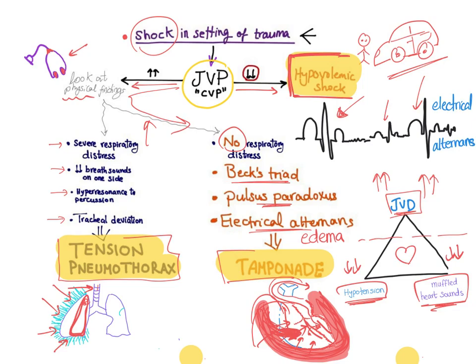To summarize: a trauma patient in shock has three main diagnoses — hypovolemic shock, tension pneumothorax, or cardiac tamponade. First check the jugular venous pressure: if decreased, it's hypovolemic shock. If increased and there is severe respiratory distress, decreased breath sounds on one side, hyper-resonance, and tracheal deviation, it's tension pneumothorax. If there is no respiratory distress but Beck's triad is present — jugular venous distension, hypotension, muffled heart sounds — along with pulsus paradoxus and electrical alternans, it's cardiac tamponade.